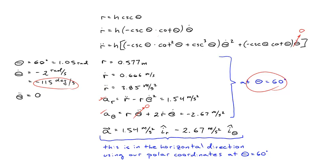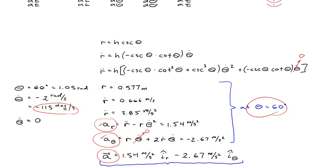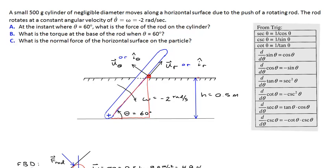The reason we care about all of this is to find the acceleration in the radial and transverse directions. Running the numbers gives components again in the radial and theta directions, and the acceleration vector is in the horizontal direction. The particle can only accelerate in the horizontal direction — it's constrained by the horizontal surface, so there's no way it can move in the vertical direction. Keep in mind we have a horizontal and vertical direction defined independent of the coordinate system we use.